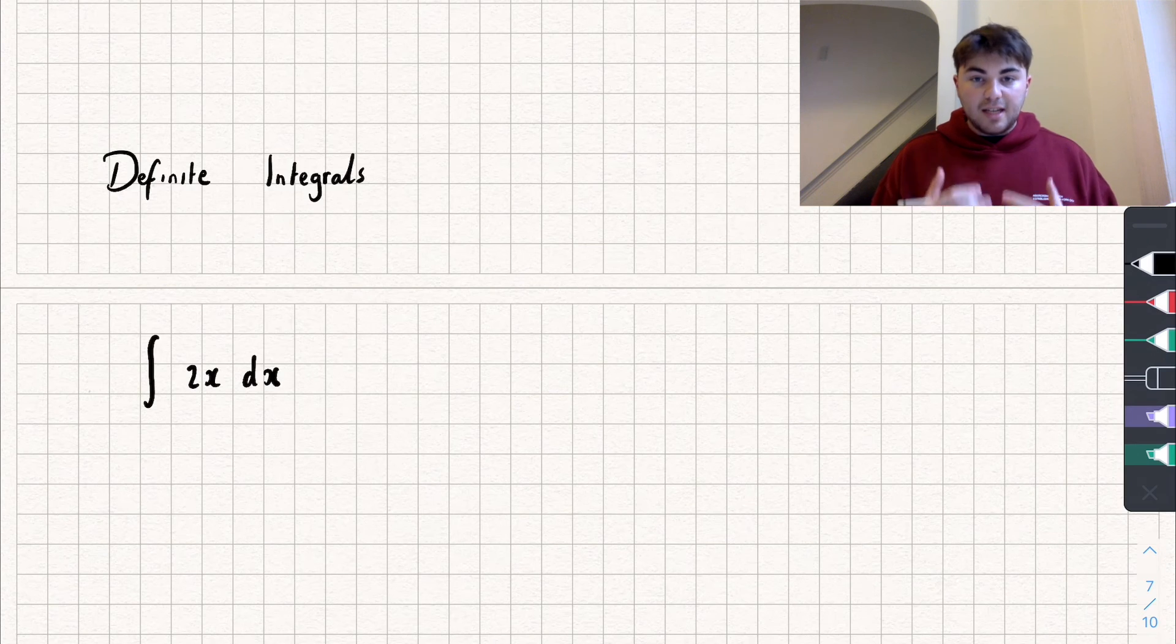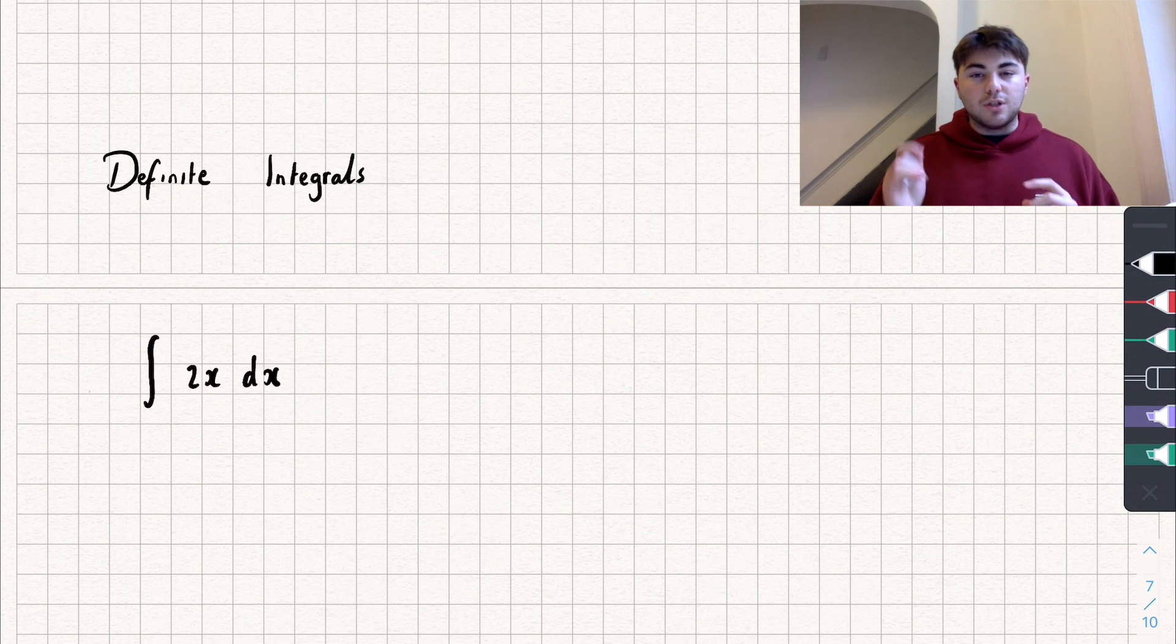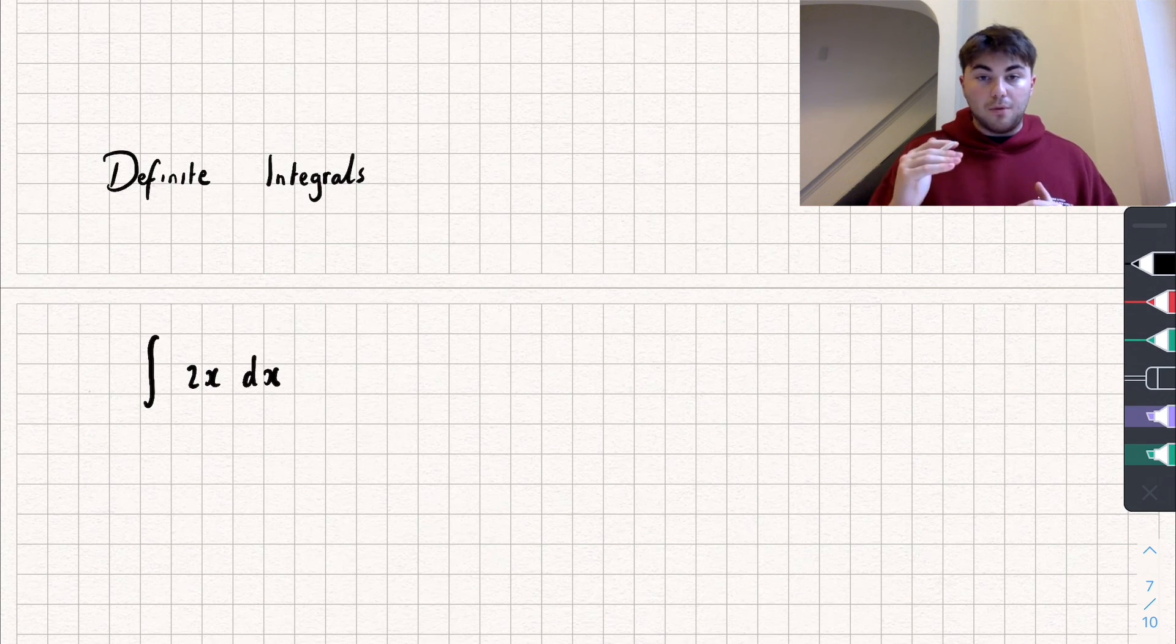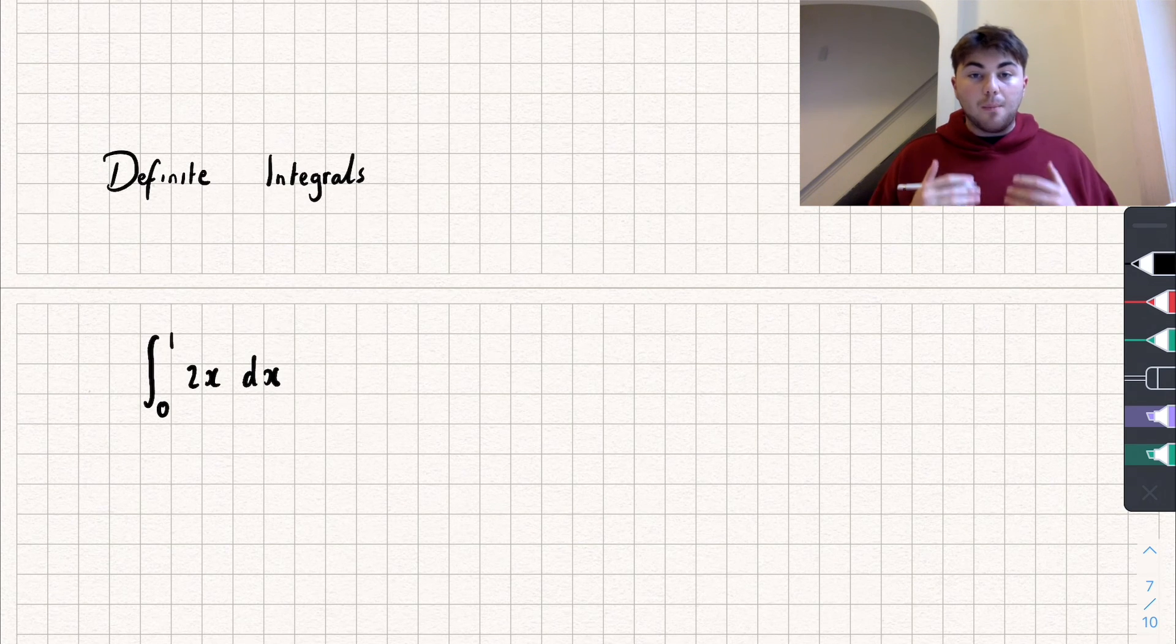Now this at the minute is what we call an indefinite integral because it's just an integral with no bounds or limits. If we added limits which are just little numbers that we write on the top and bottom of the integral, for example between 0 and 1 like this, this has now become a definite integral.